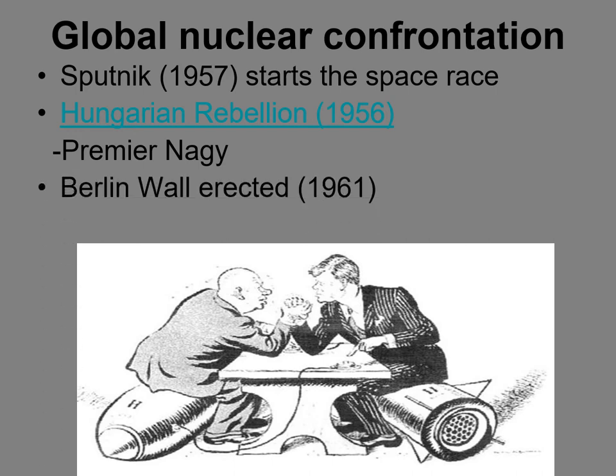Likewise, when thousands of people started leaving the Soviet Union and Eastern Europe for the West, the Soviets responded to the East German government's plea for help. Together, they constructed the Berlin Wall in 1961 to force people to enter and exit West Berlin through military checkpoints, effectively closing this border.